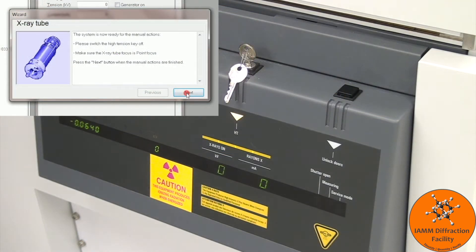We see that the screen says to turn off the high-tension key so we will rotate that so that the light turns off. It then says to make sure the x-ray tube is in point focus.